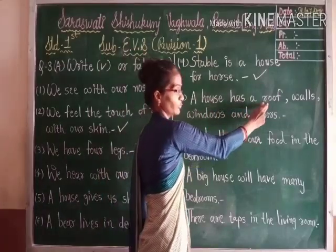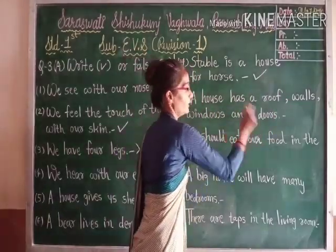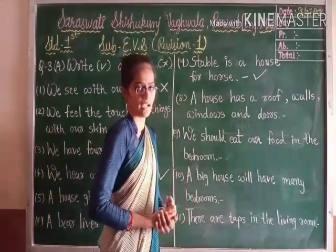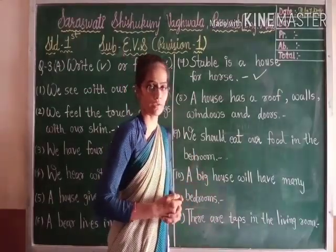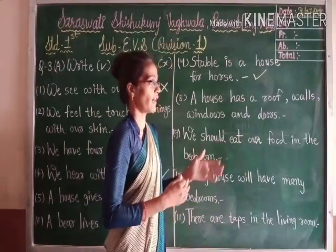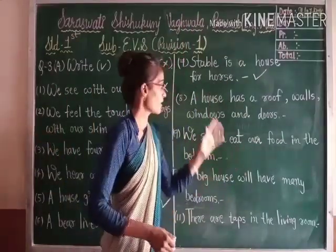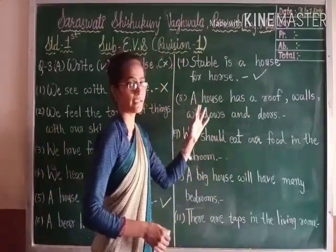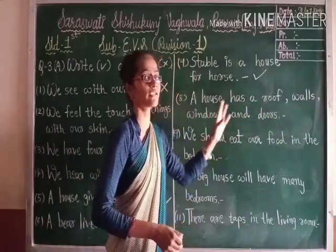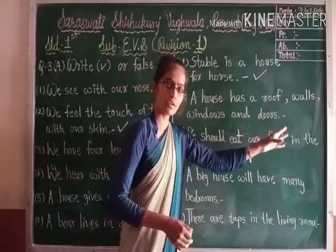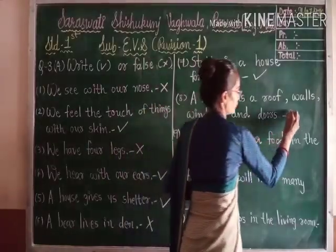Number 8: a house has a roof, walls, windows and doors. You have all seen a house and are familiar with its structure. A house has a roof, walls, windows and doors — so it is true. We will put a tick mark.